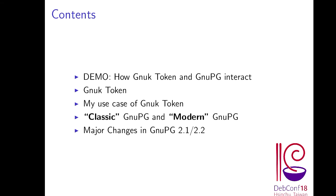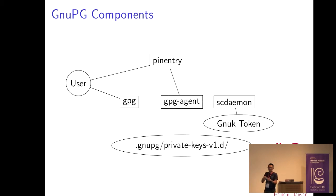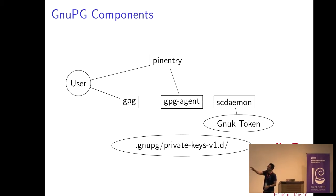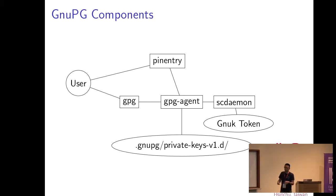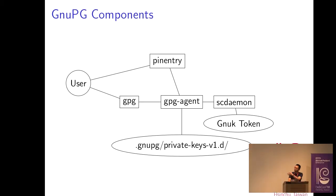Here is some contents. This figure explains the GnuPG components. We have multiple processes: GPG, GPG Agent, SC Daemon, and PinEntry. When a user asks GPG for signature generation, all those processes — PinEntry, GPG, GPG Agent, and SC Daemon — work together. And today, our family demonstrates how those processes interact.